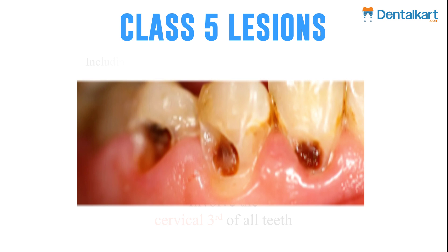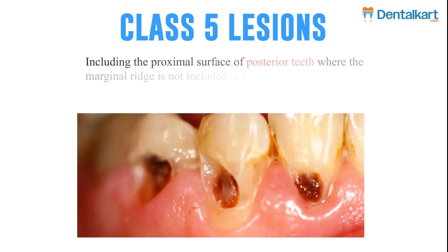Class 5 lesions involve the cervical third of all teeth, including the proximal surface of posterior teeth, where the marginal ridge is not included in the cavity preparation.